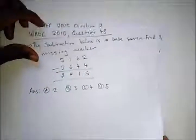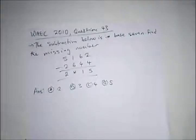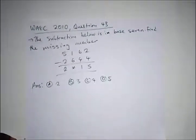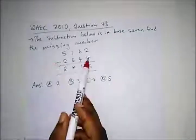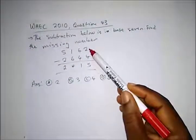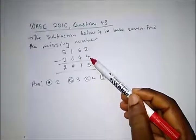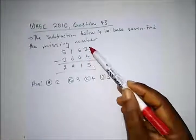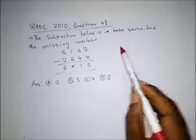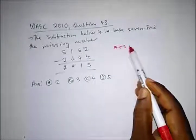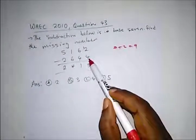Our next question is from WAEC 2010, question 43. It says the subtraction below is in base 7 — find the missing number. In base 7, 2 cannot subtract 4, so when we carry a 1, it becomes 7. That's 7 plus 2, which is 9. So 9 minus 4 is 5.